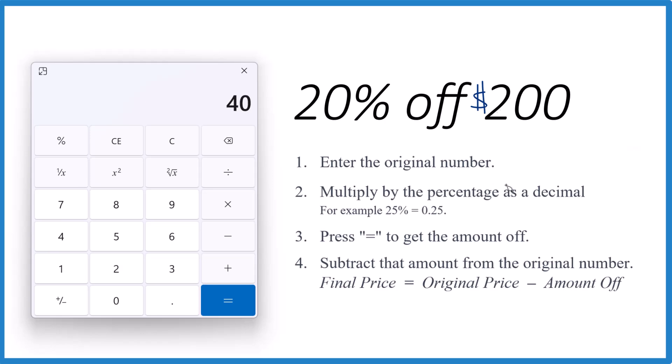Then we hit equals, and that gives us 40. So that's $40, and that's what we're going to save. So this is 20% of $40. This is a 20% portion of $40.